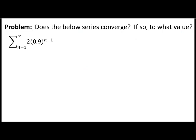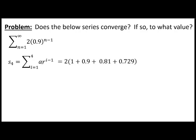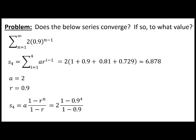Back to our question. Before we go further, let's do a quick test on that partial sum formula. Let's find S of 4, which is the sum of the first four terms. It's going to be 2 times the first term plus the second plus the third plus the fourth, which equals approximately 6.878. Using our formula with A equals 2 and R equals 0.9, we plug in N equals 4 and calculate — we get 6.878, the same value. So we know we're on the right track.